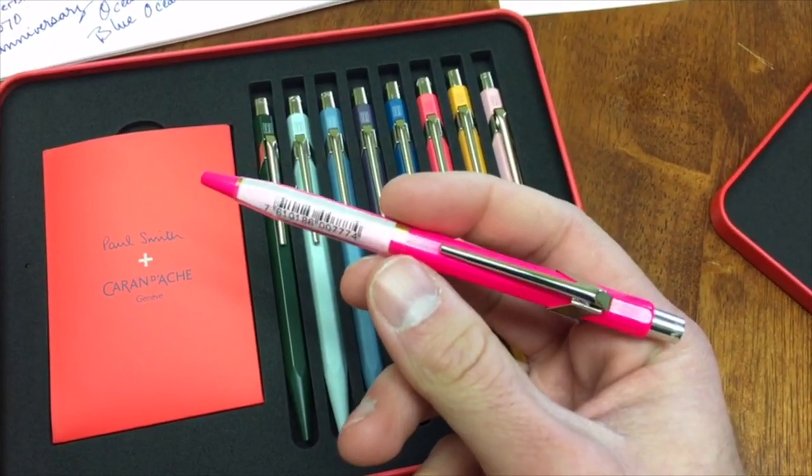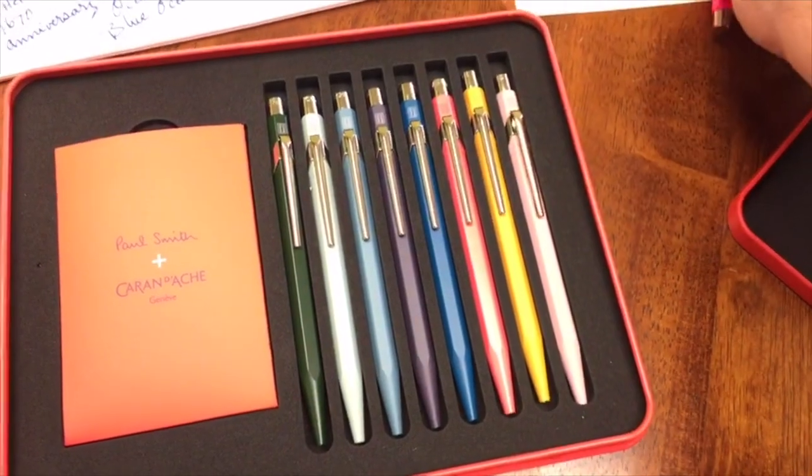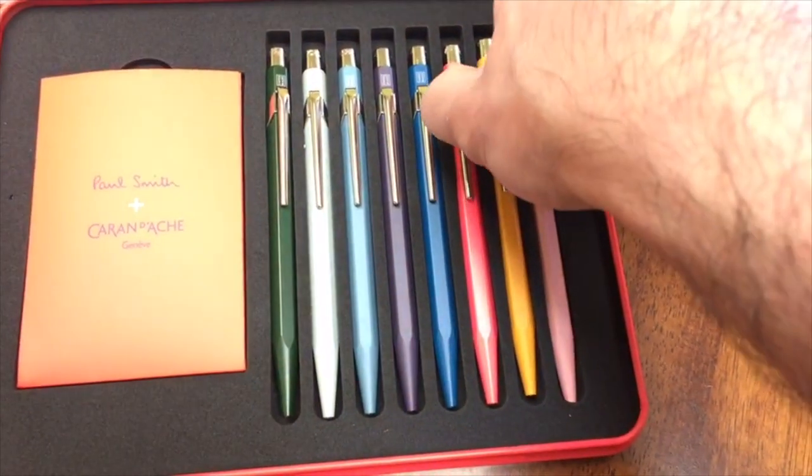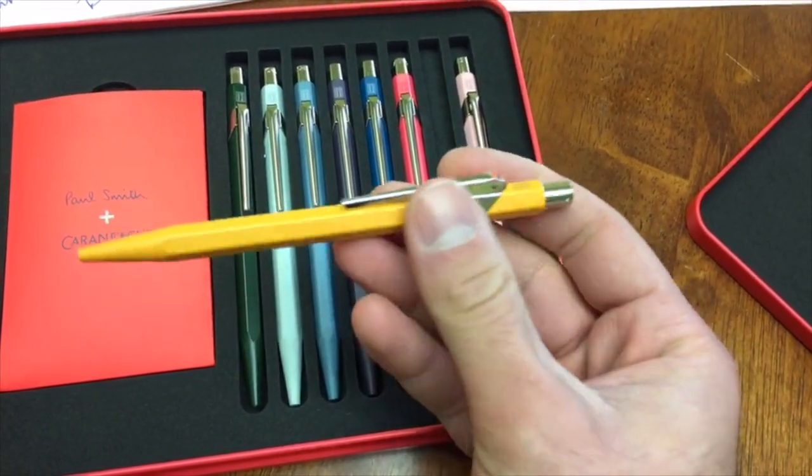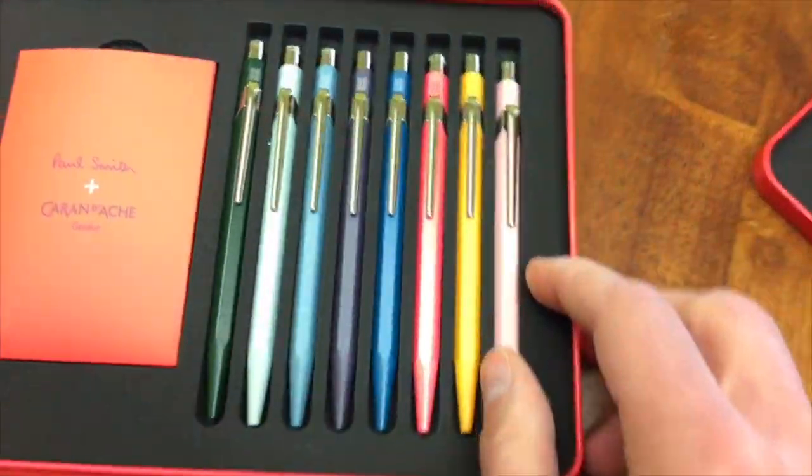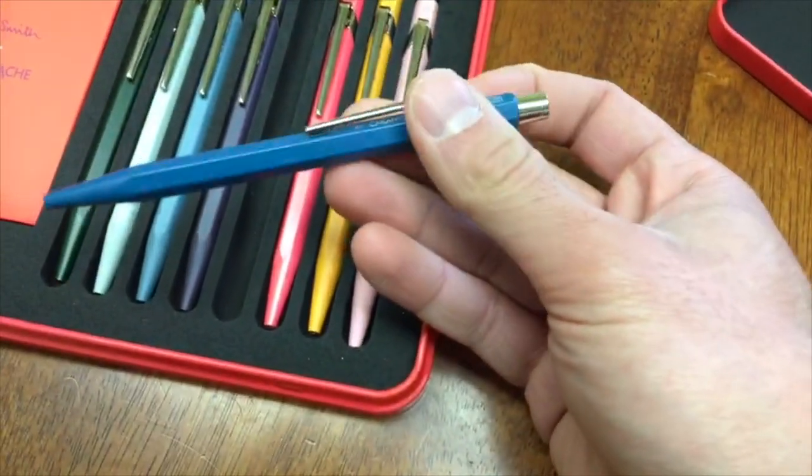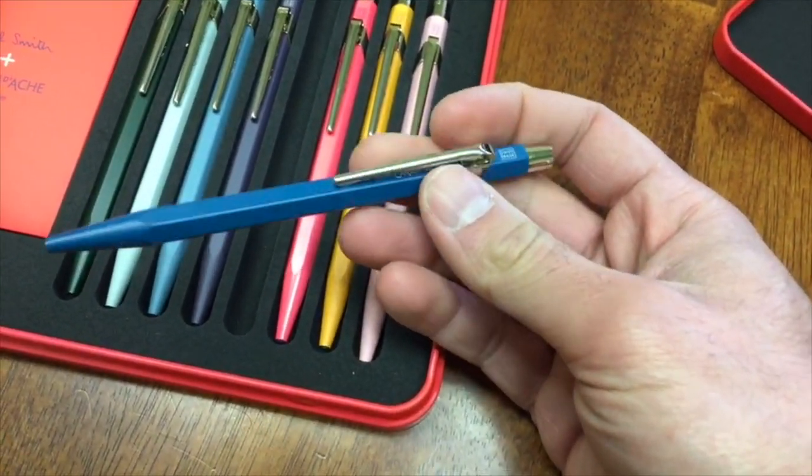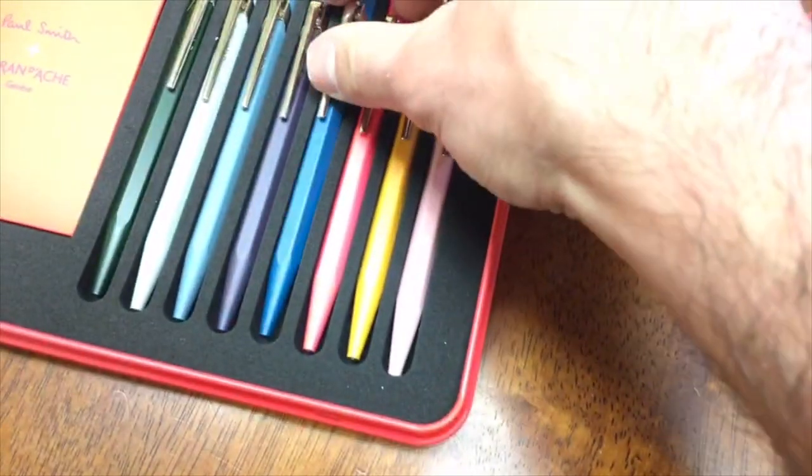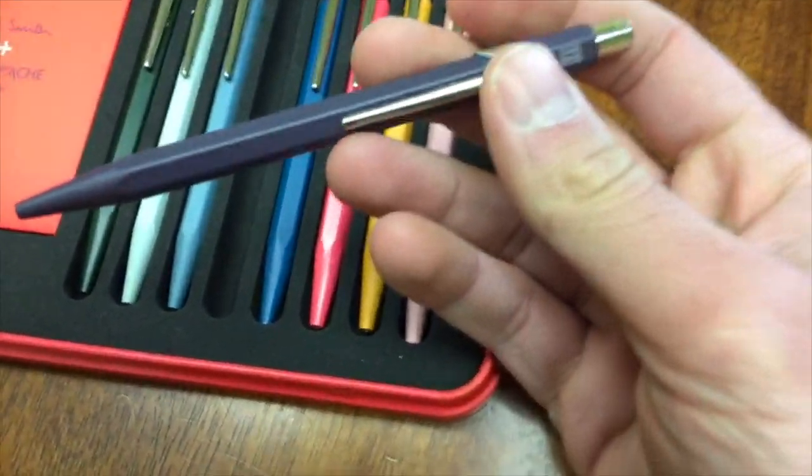This is a fantastic collection. Like I mentioned earlier with the standard 849 poplines, the 849 metal collection is one of the best-selling entry-level ballpoint pens that have a tremendous amount of quality. That's what Caran d'Ache gives you—awesome Swiss quality. This collection gives you that quality with a fashionable amount of color and design.